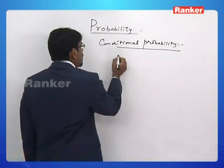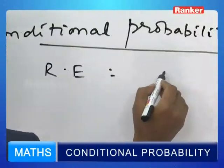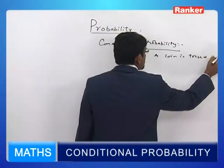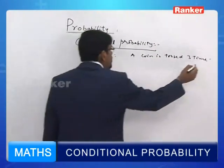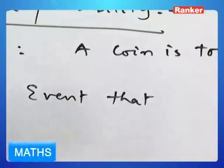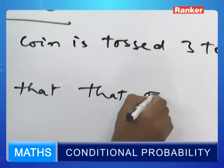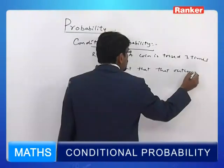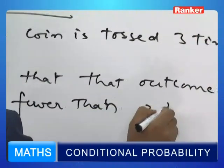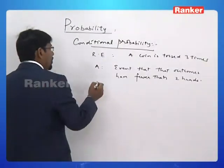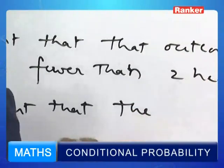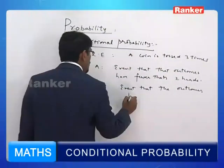Let us think of a random experiment wherein a coin is tossed three times. Let A be the event that the outcomes have fewer than two heads. B is the event that the outcomes have no head.